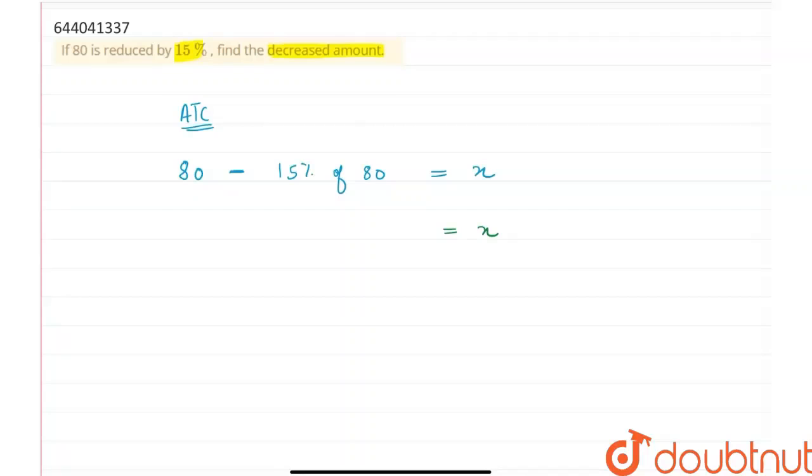Therefore, my x would be the decreased amount. So it would be 80 minus 15 upon 100 into 80 is equal to x.